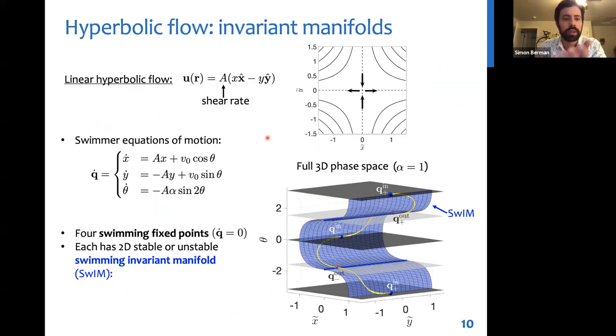Now, what happens if you put this kind of swimmer in a simple flow? And this flow we'll focus on for most of the talk is the linear hyperbolic flow given here. So if you look at passive particle trajectories in the flow where fluid is pumped in on the vertical axis and taken out on the horizontal axis, we see the fluid particle trajectories as these black curves. And we see there are transport barriers, namely these vertical and horizontal lines, which are the invariant manifolds of the unstable fixed point at the center of this flow.